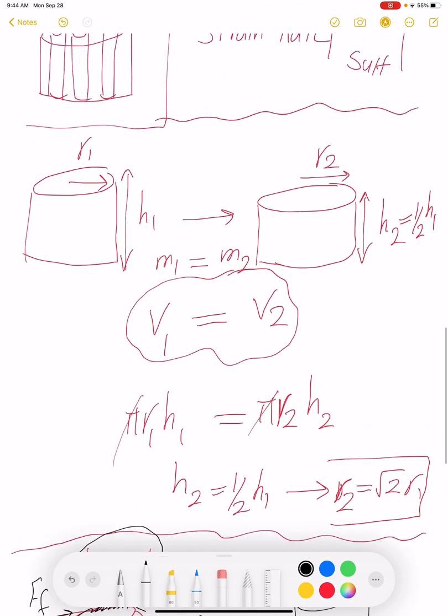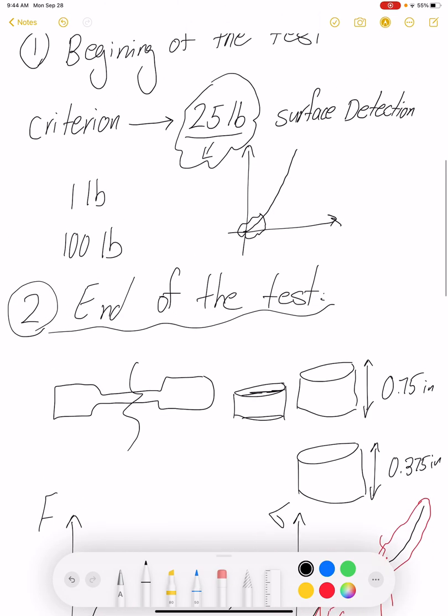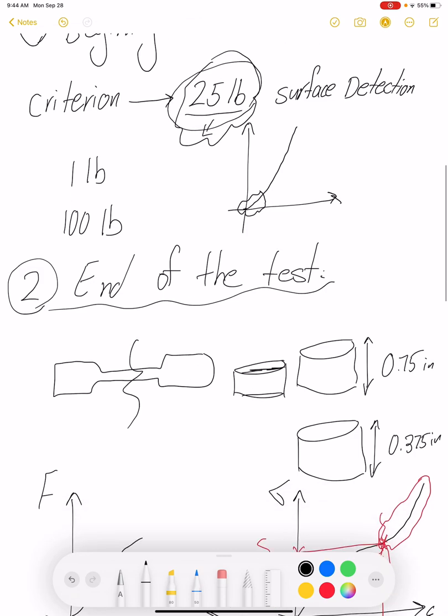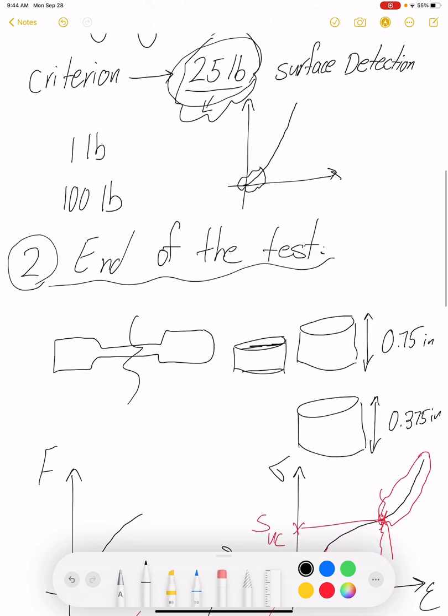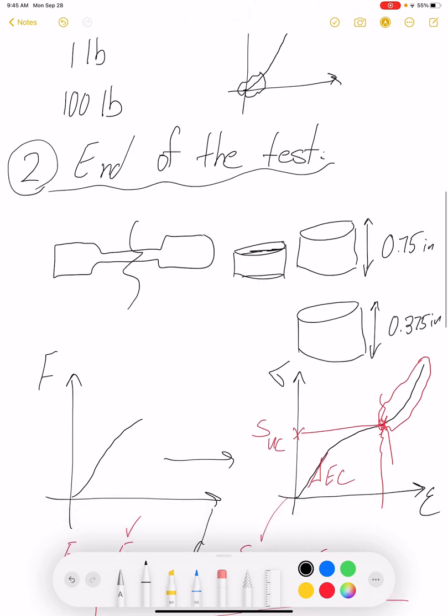So a couple of important things for compression testing. First is the beginning and the end. The beginning is the force criteria. The end is the displacement criteria because we don't know what force is causing our specimens to deform under compression. We could calculate that, but it's much easier to assign a displacement criteria.